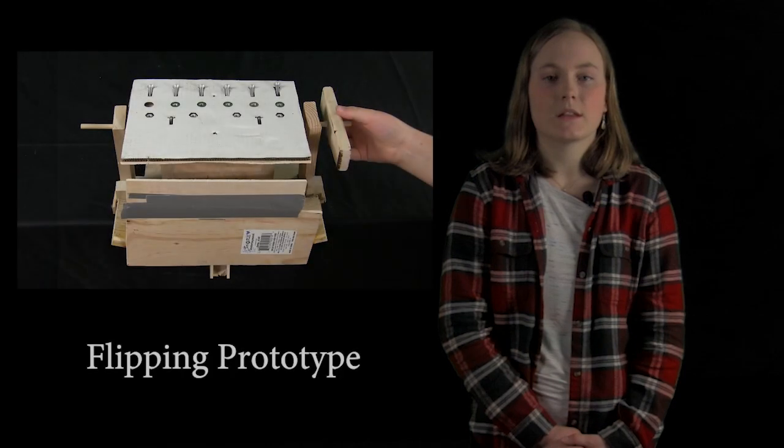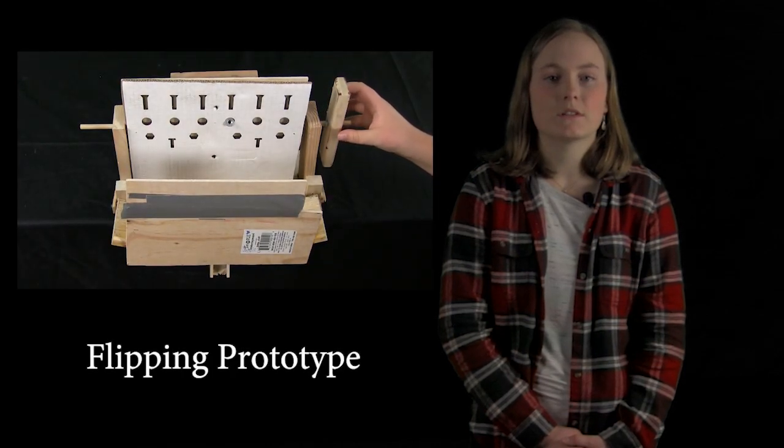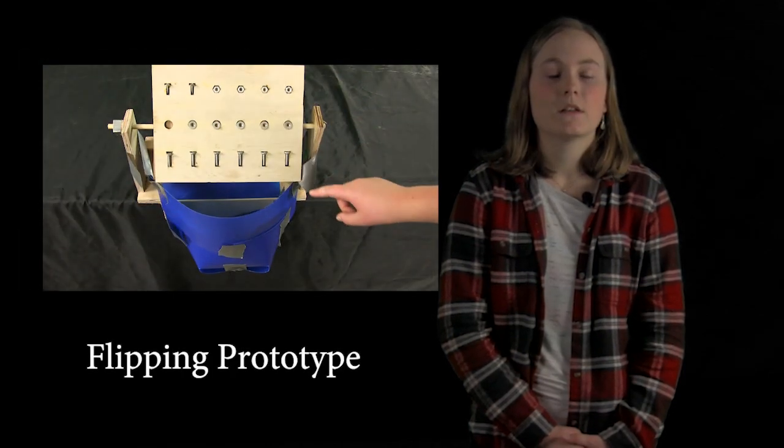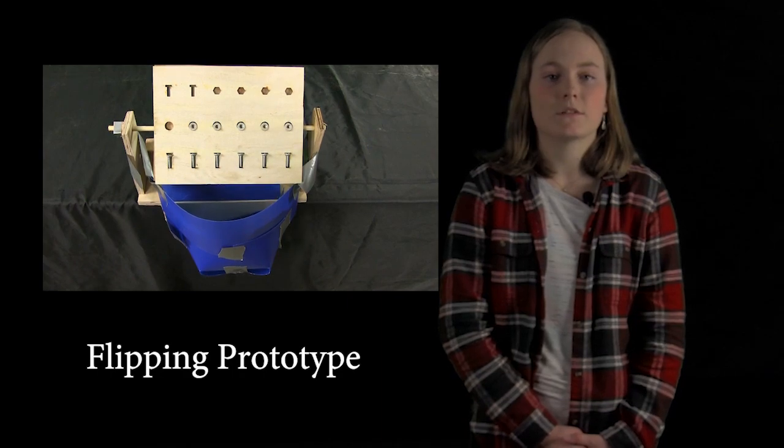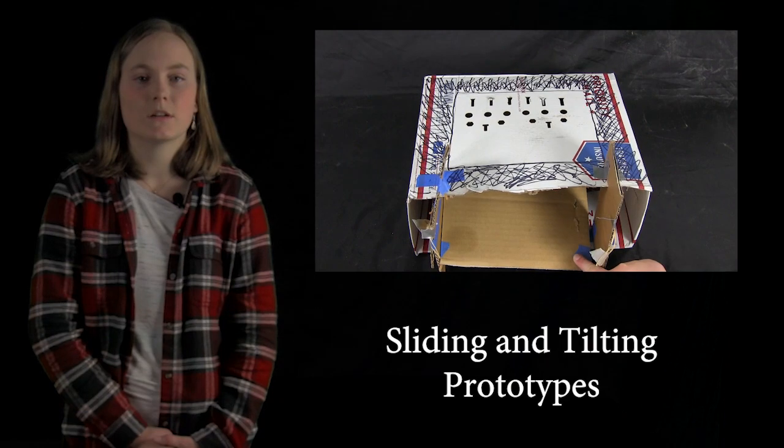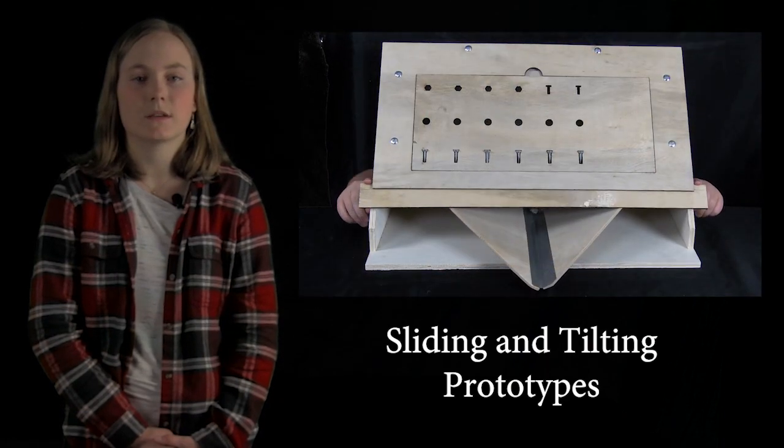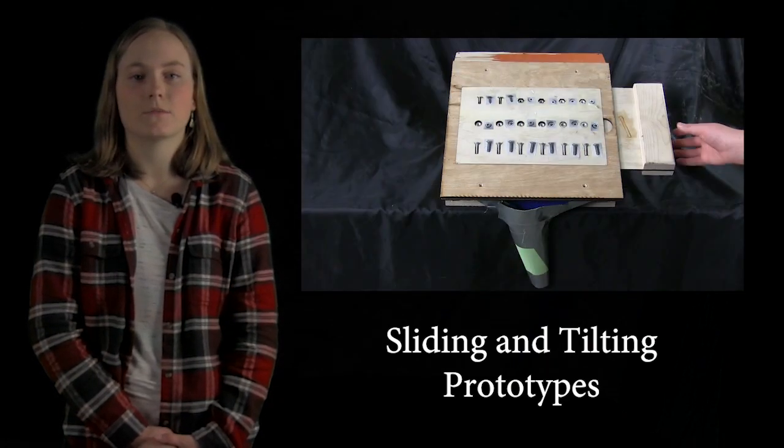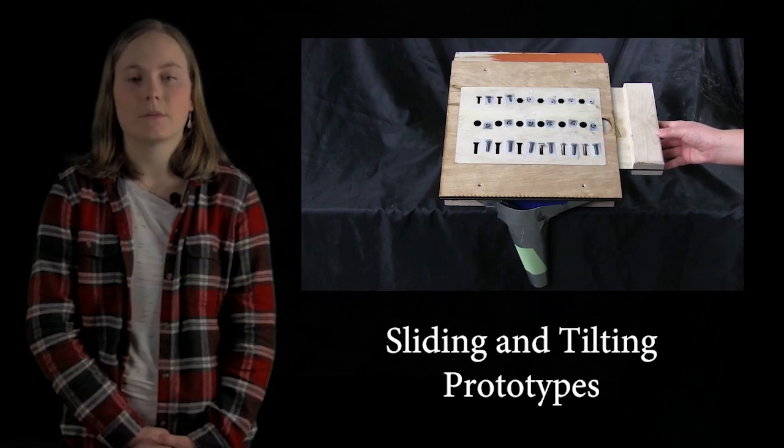Our first set of prototypes enabled the user to load material into the top, then push the plate backwards, letting it rotate and dump all the material down a ramp into a bag. The second set of prototypes highlighted a stationary plate where either a sliding or tilting mechanism allowed the loaded material to fall from their slots down a ramp into a bag.